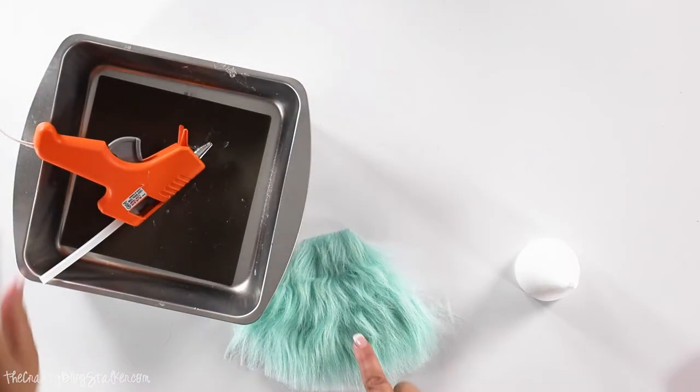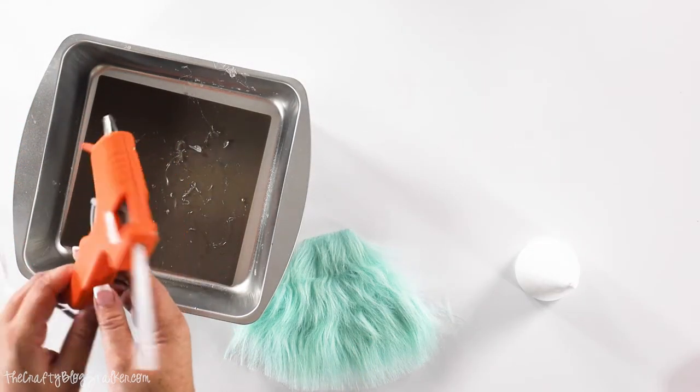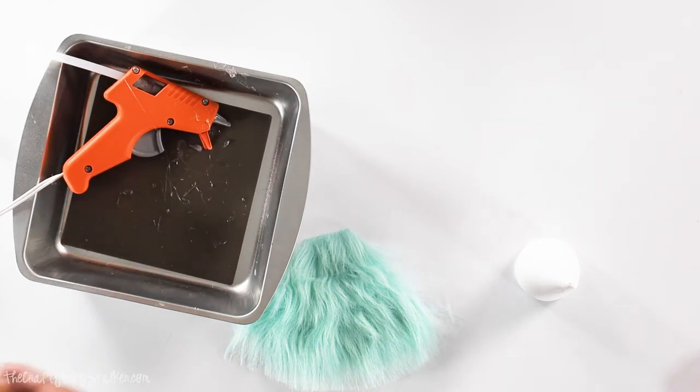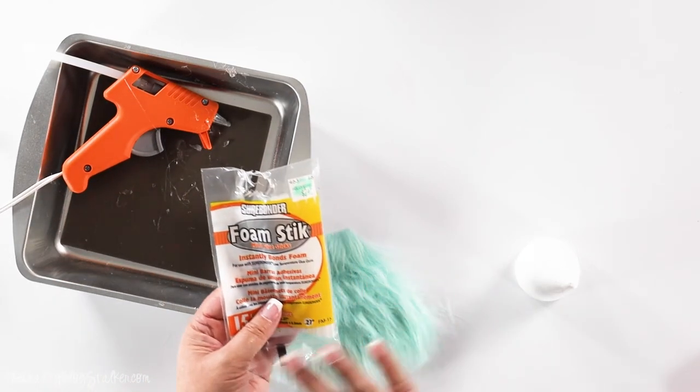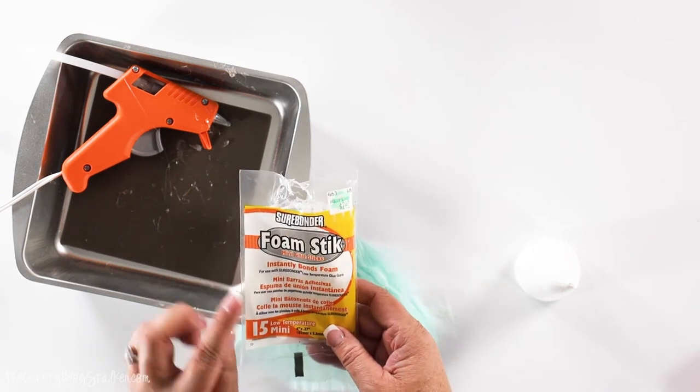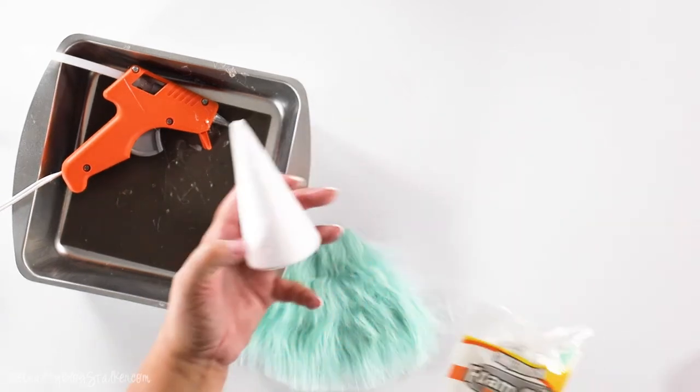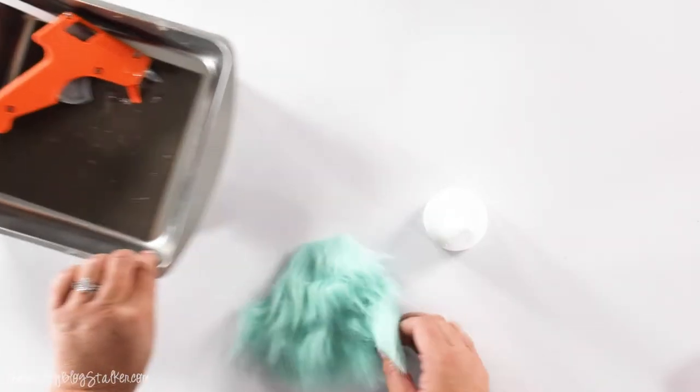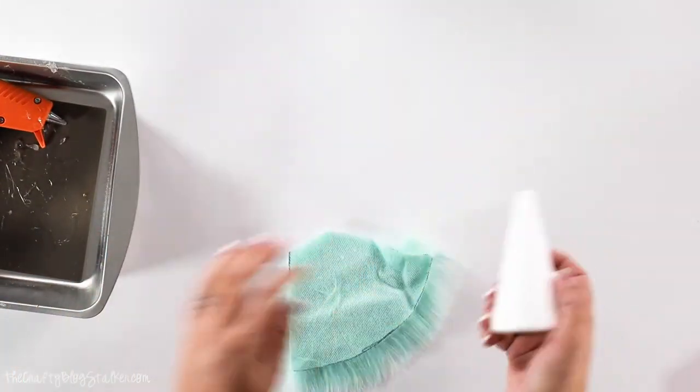Now I'm going to bring in my foam glue gun. Now this is not a regular hot glue gun. This hot glue is for foam. I keep it separate from my other glue guns. So it works with styrofoam so it doesn't melt as badly. So that's the hot glue that we're going to be using.